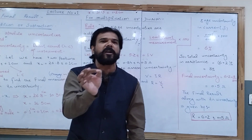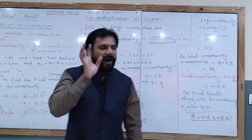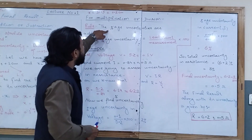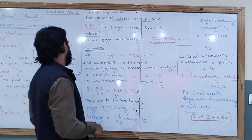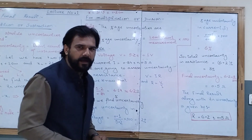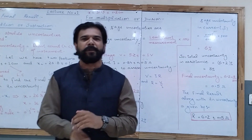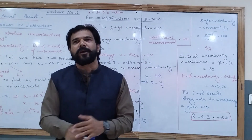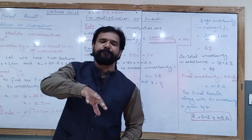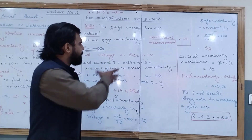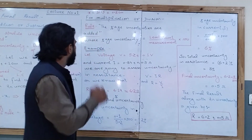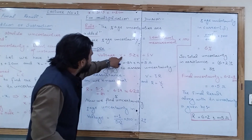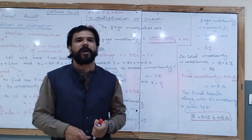In multiplication and division, we need to assess uncertainty using the rule that percentage uncertainties are added. As an example: the voltage V = 5.0 ± 0.1 V, where 0.1 V is the absolute uncertainty equal to the least count of the voltmeter.